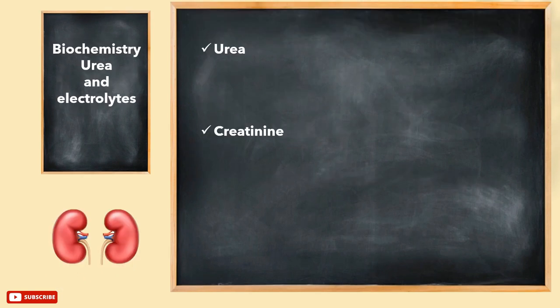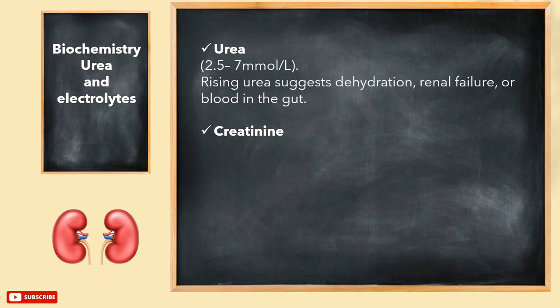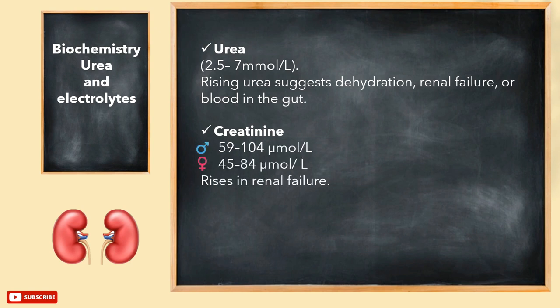Then by chemistry, urea and electrolytes. Here is the normal range for urea — a rising urea suggests dehydration, renal failure, or blood in the gut. Creatinine normal level varies between males and females and it rises in cases of renal failure.